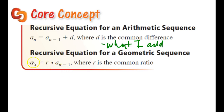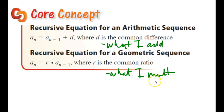For a geometric sequence, a sub n equals r times a sub n minus 1, where r is the common ratio — what I multiply by each time. Dividing is the same as multiplying by a fraction. So this tells me that the new term equals the common ratio times the previous term. We've seen both of these written as explicit terms, and now we're looking at recursive forms.